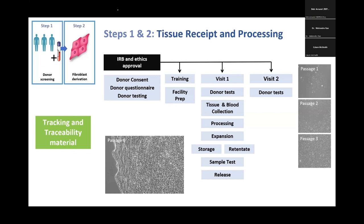When looking for any organization helping you collect tissue samples, these are the questions you need to ask. ReproCell has considered this and provided an appropriate process. You need to have training, your facility has to be prepared, you need to do appropriate tests at the first visit, take the punch biopsy, start the expansion, and conduct a follow-up visit to confirm the donor tests that are required.